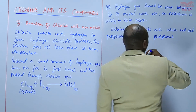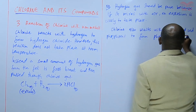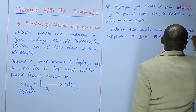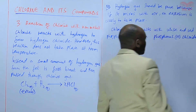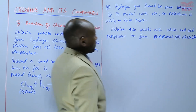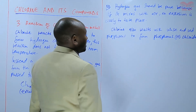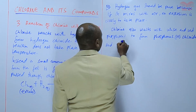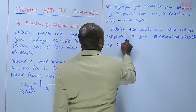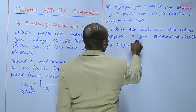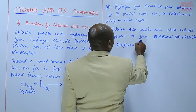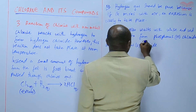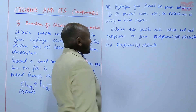Phosphorus forms phosphorus trichloride (PCl3) if chlorine is in limited supply, and phosphorus pentachloride (PCl5) if chlorine is in excess.